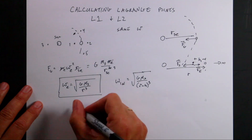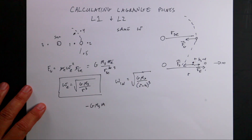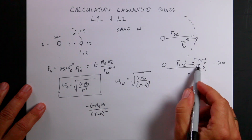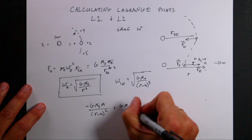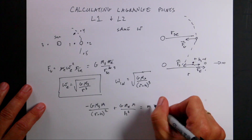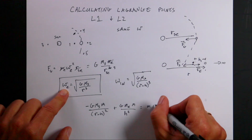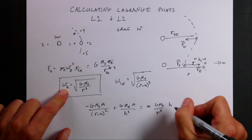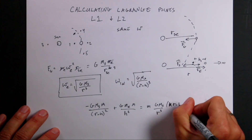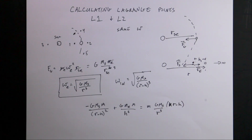The force from the Sun is in the negative x-direction: negative G times mass of the Sun times mass of the spacecraft M, over (R minus H) squared. Then I have the gravitational force from the Earth, which is plus G times mass of the Earth times M over H squared, because it's only an H distance away. The sum of those forces equals M times Omega squared times (R minus H) — the actual radius of orbit. Omega squared is G times mass of the Sun over R cubed, so the right-hand side becomes G times M_Sun over R cubed times (R minus H). Now I want to solve this for H.